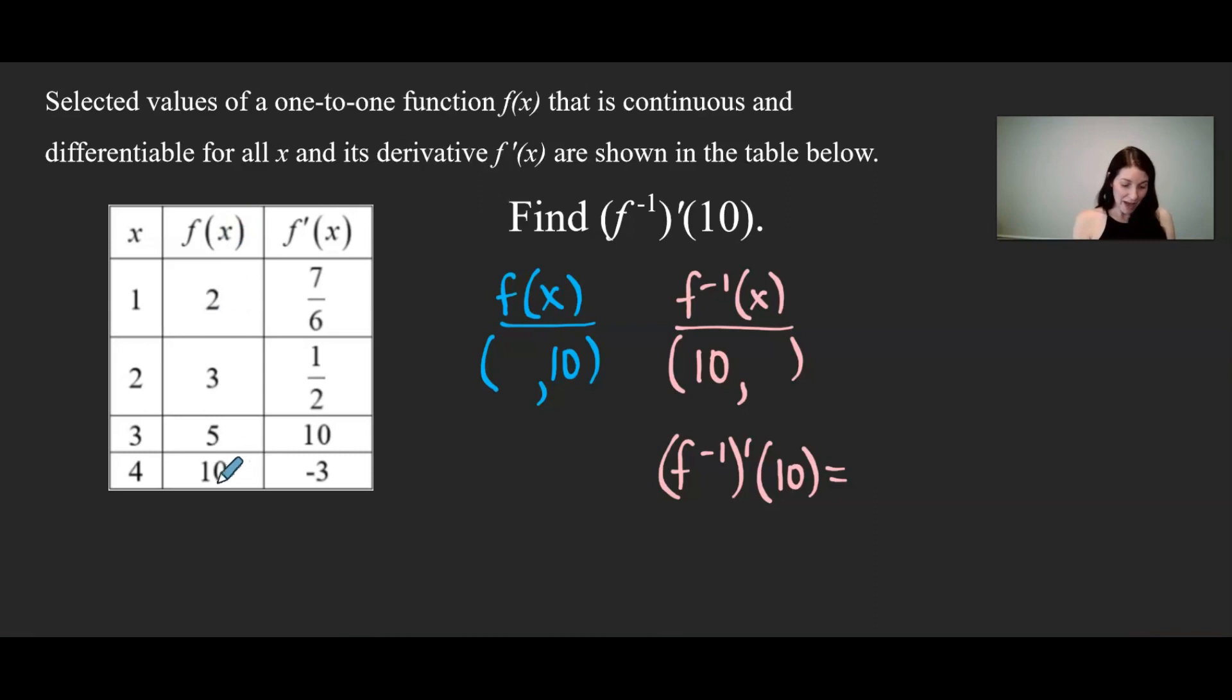This is now when I'm going to go to the table. The table has information about f(x). When f(x) is 10, the x value is 4. So that helps me replace the x coordinate with 4, which then is the same thing as the y coordinate of its inverse.